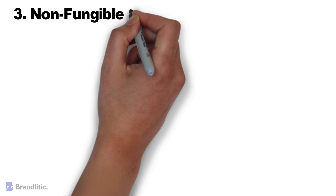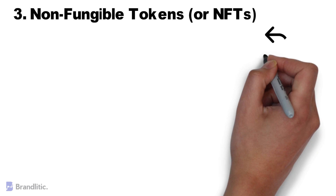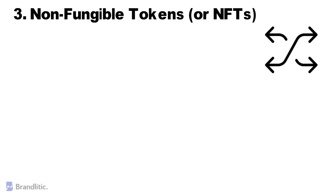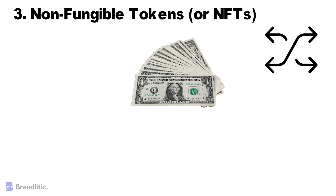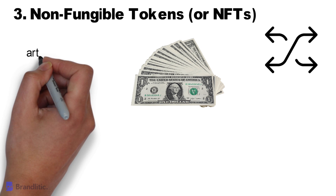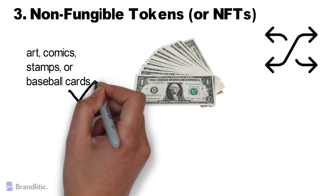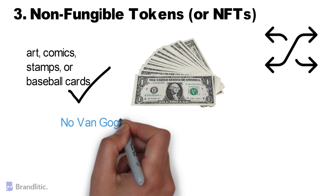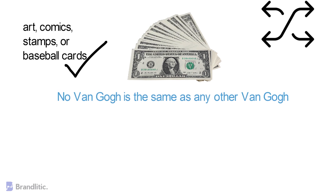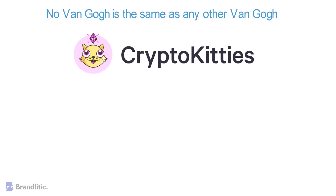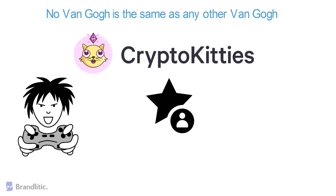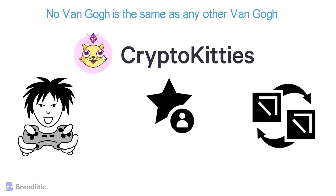Number three: Non-Fungible Tokens, or NFTs. All coins and most tokens are interchangeable — if you have multiple $1 notes, it doesn't matter which one you use to pay for a snack. However, if you buy a collectible such as art, comics, stamps, or baseball cards, it does matter which one you have. No Van Gogh is the same as any other. The digital equivalent of this is CryptoKitties — the idea is that you, and only you, can have some unique digital value. This is especially attractive for computer games where players already pay for rare items, and putting those on blockchain gives players more control over their earned assets. It may even be possible to trade items across games in the future.